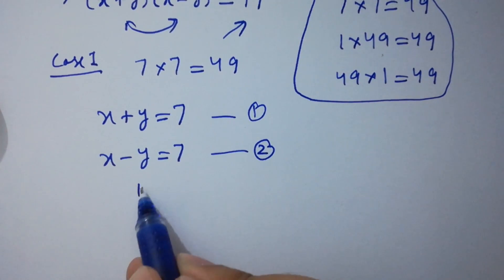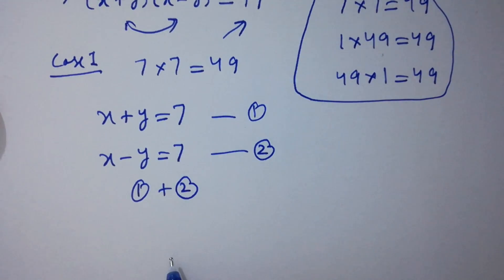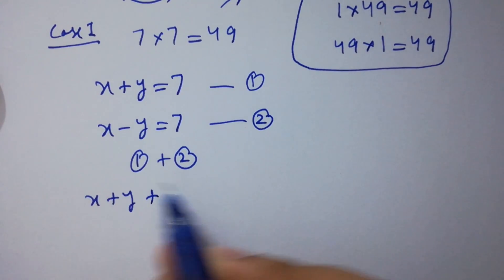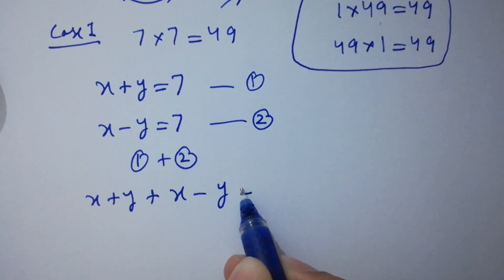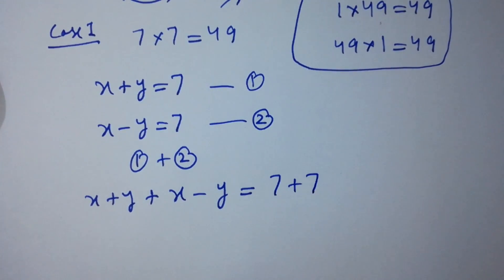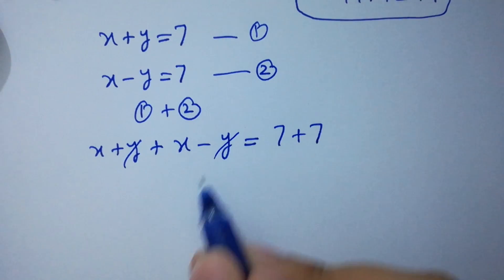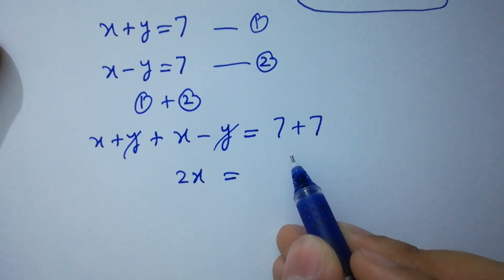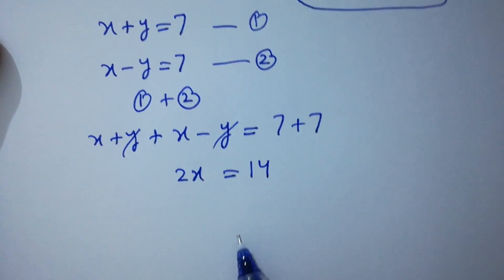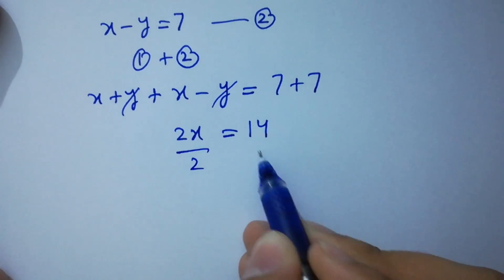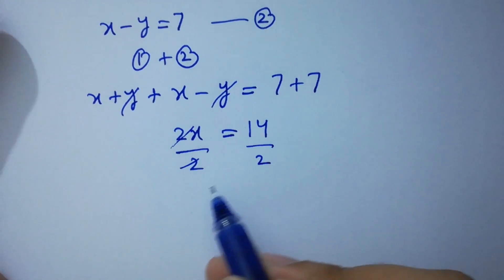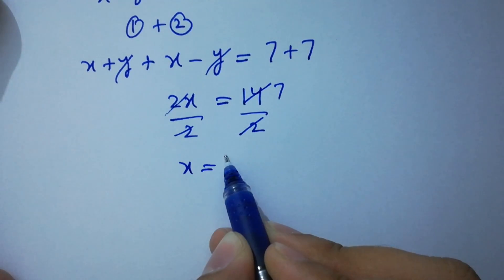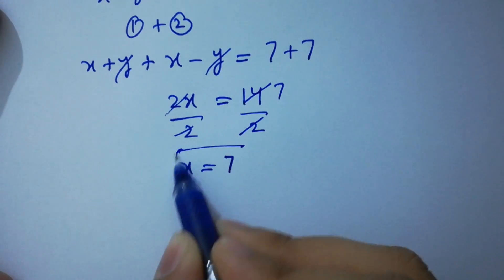Adding the two equations: x plus y plus x minus y equals 7 plus 7. The y terms cancel, giving us 2x equal to 14. Dividing both sides by 2, we get x equal to 7.